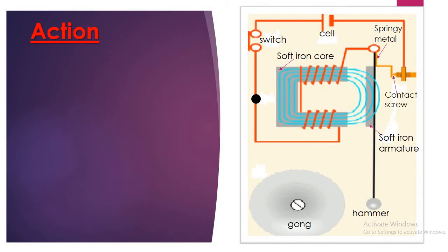Now, on my right, there is a diagram well labeled. This is the circuit diagram of an electric bell.